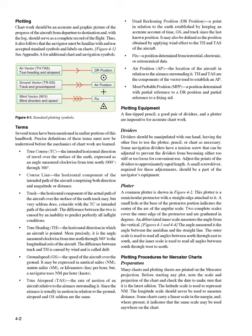Figures 4-3 and 4-4. The angle measured is the angle between the meridian and the straight line. The outer scale is used to read all angles between north through east to south, and the inner scale is used to read all angles between south through west to north. Many charts and plotting sheets are printed on the Mercator projection. Before starting any plot, note the scale and projection of the chart and check the date.